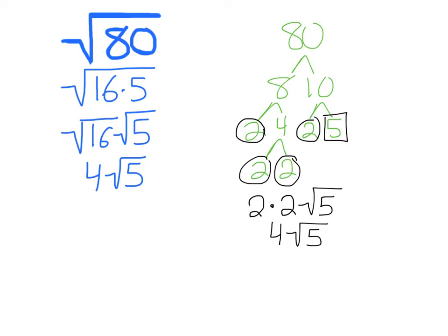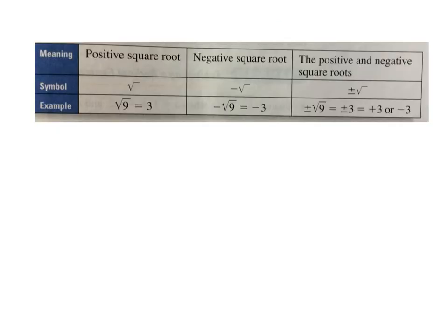However, now we're going to actually be solving equations using these strategies. Up until now, we've been using the positive square roots of most numbers. For example, the square root of 9 is the positive version, 3. Or if we see the negative sign, then we take the negative square root — so the negative square root of 9 is negative 3.